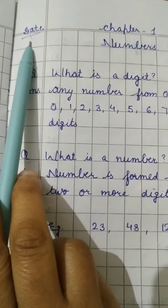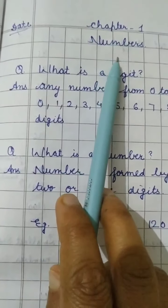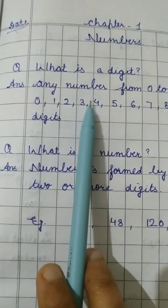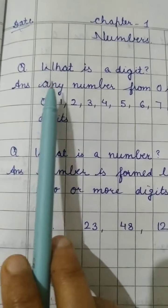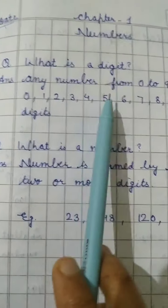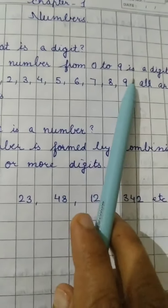So let's write down date chapter 1 numbers. The same things which we have already done in class 2. So I am just going to repeat that. What is a digit? Any number from 0 to 9 is a digit.